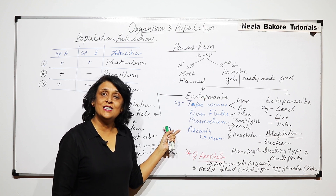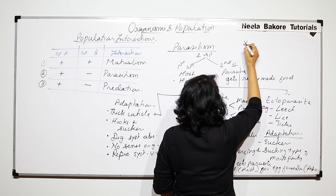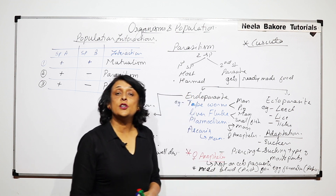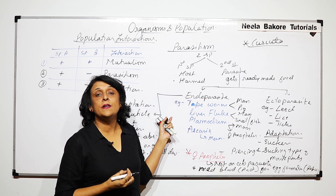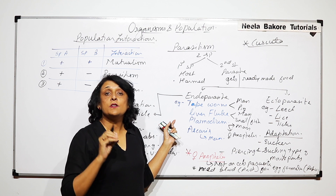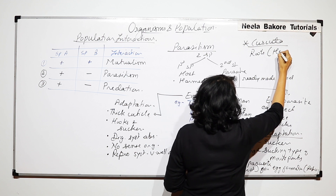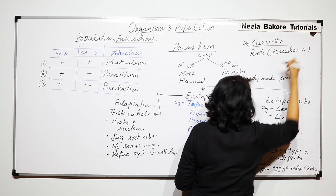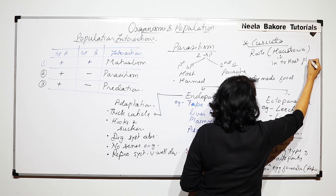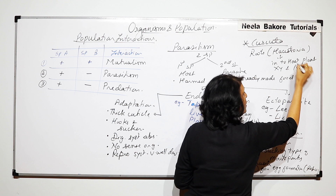Parasites can be classified as endo or ecto depending on where they are found. In case of plants, Cuscuta is an example of a parasite. Cuscuta absorbs nourishment from the host plant and does not require leaves. Its roots, called haustoria or parasitic roots, penetrate into the host plant and go up to the xylem and phloem.